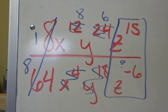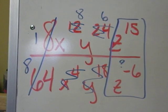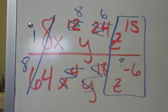24 minus 18 is 6, also positive. The y's remain in the numerator.